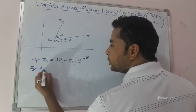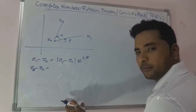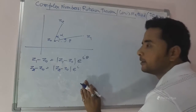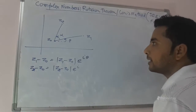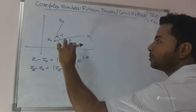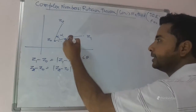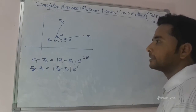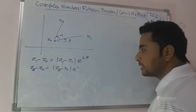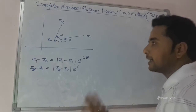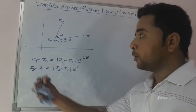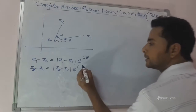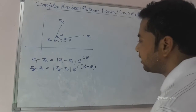Similarly, if you write Z2 minus Z0 in Euler form or polar form, it will be |Z2 minus Z0| times e raised to the power iota times its argument. The total angle that this line segment is making with respect to the positive direction of the x-axis is theta plus alpha. That means the argument of the line segment connecting Z0 with Z2 is alpha plus theta, because that is the total angle this line makes with the positive x-axis in the anticlockwise direction. So the total argument will be alpha plus theta.